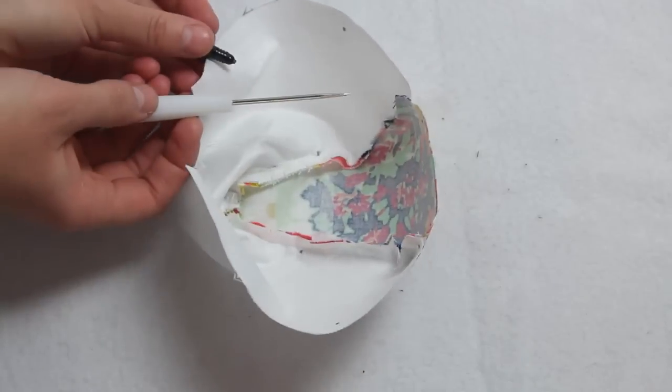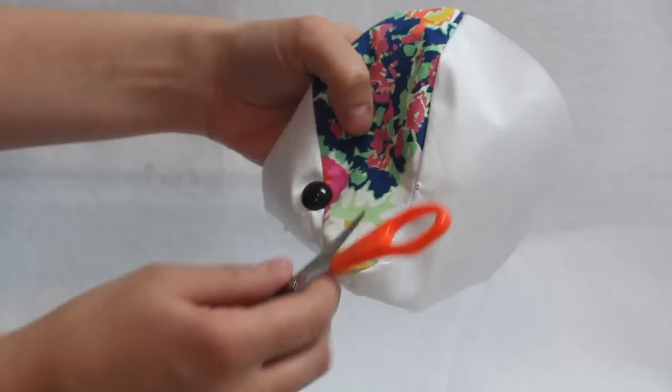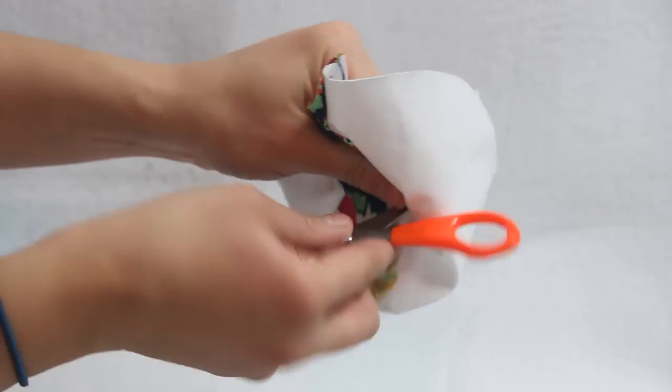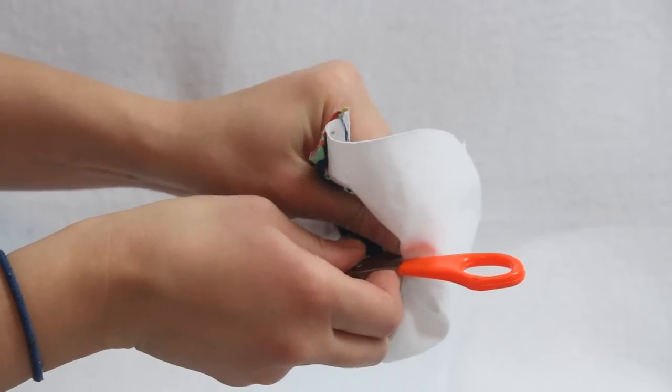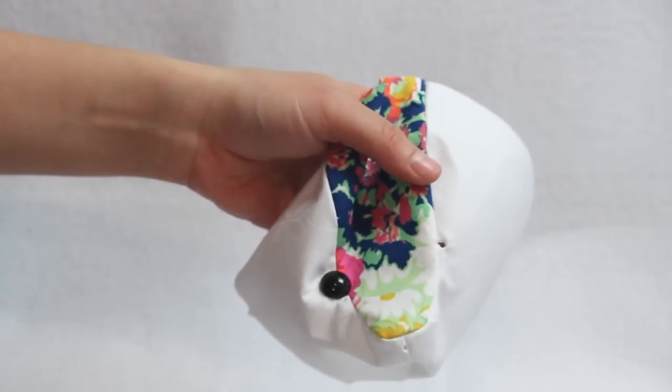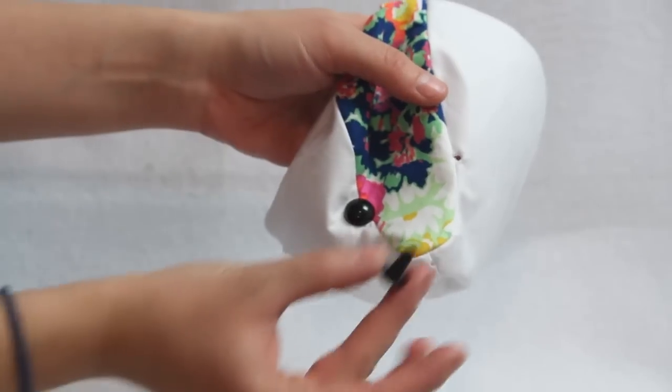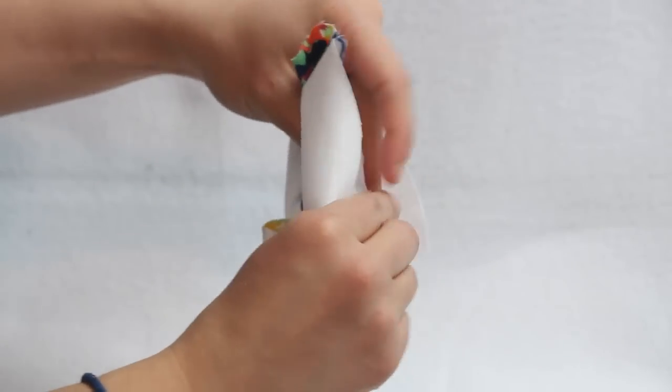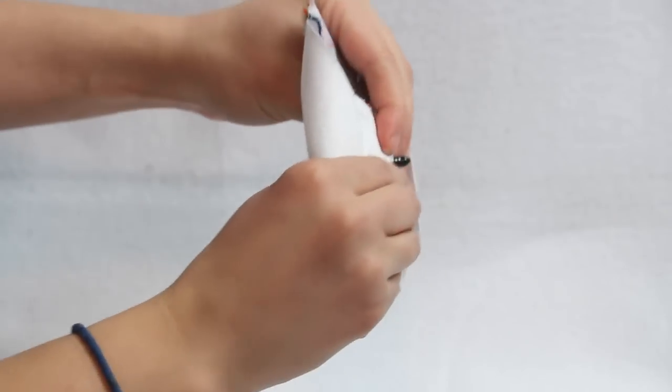As you can see my awl is much skinnier than the post on the eyes, so I then use a small pair of scissors to carefully enlarge the hole. Be careful doing this because you don't want the hole to end up too big, and that's one reason why I don't actually snip a hole with the scissors. I just slowly poke the blade of the scissors further into the fabric and make the hole larger that way.